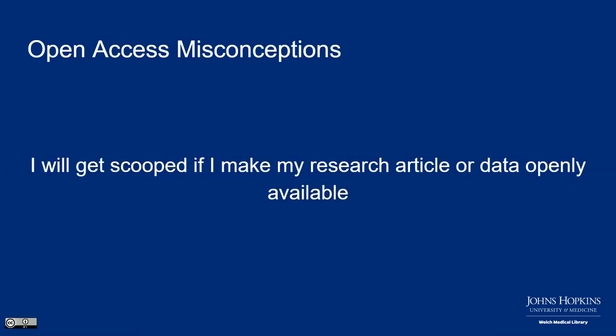And finally, the misconception: 'I will get scooped if I make my research or data openly available.' This can happen whether or not your research is open access. But when you post or publish research in an open access or preprint repository, much of the time that is a digital footprint. Preprint repositories have identifiers and DOIs, so you've essentially asserted your copyright over that information, and anyone who would steal it is breaking the law.